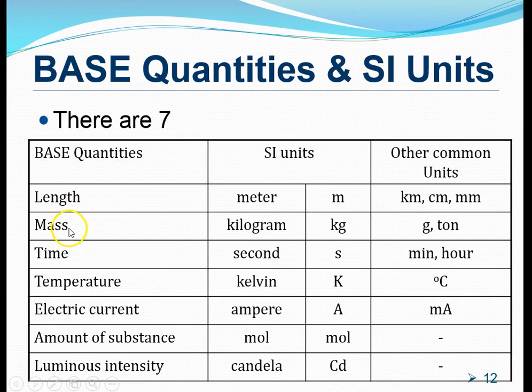Now, in physics, the seven are the length, mass, time, temperature, electric current, amount of substance, and luminous intensity. Now, for the purpose of O levels or ordinary levels physics, the first five are the ones that you need to remember. You need to memorize and remember them. So, these are the seven base quantities.